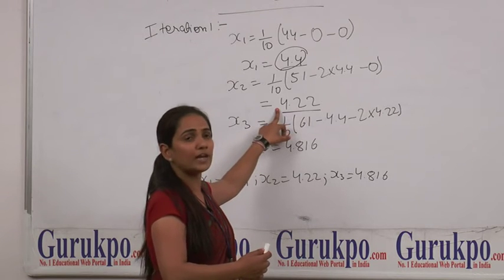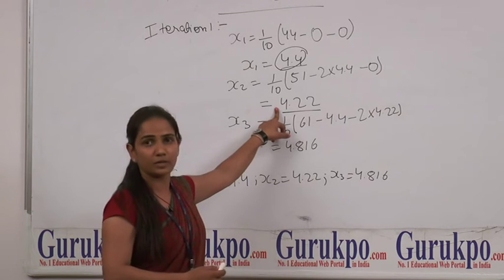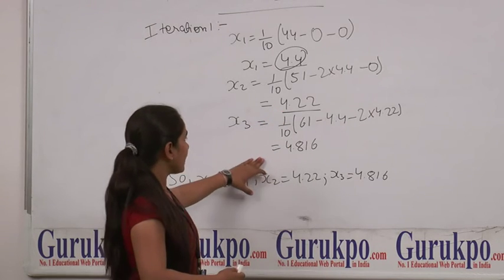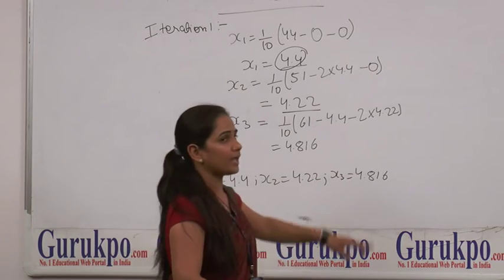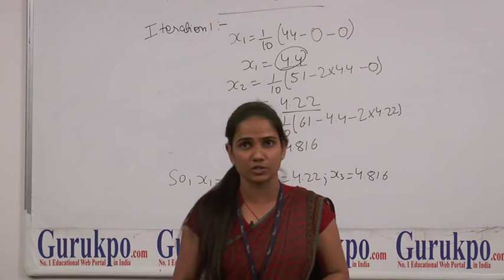So, we will substitute the values of x1 and x2, which we have just found above. Now, we get x1, x2, and x3 as our initial approximations for the next iteration.